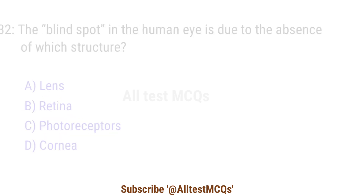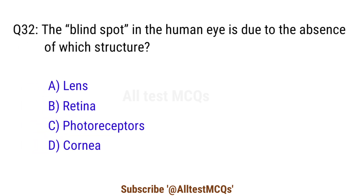Question 32. The blind spot in the human eye is due to the absence of which structure? The right answer is option C. Photoreceptors.